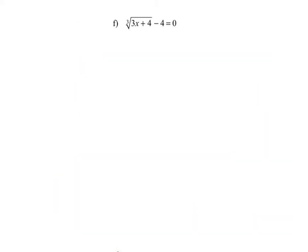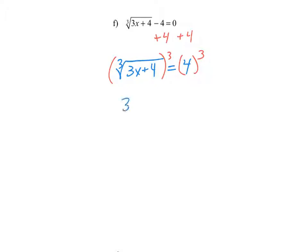In example f, we have the cube root of the quantity 3x plus 4 minus 4 equals 0. Before raising both sides to a power, we want to isolate the radical by adding 4 to both sides, giving us the cube root of the quantity 3x plus 4 on the left and 4 on the right. Now we raise both sides to the third power. Since the cube root and the third power are inverses, the left side simplifies to 3x plus 4, and the right side is 4 cubed, which is 64. Subtracting 4 from both sides gives 3x equals 60, and dividing by 3 gives x equals 20.